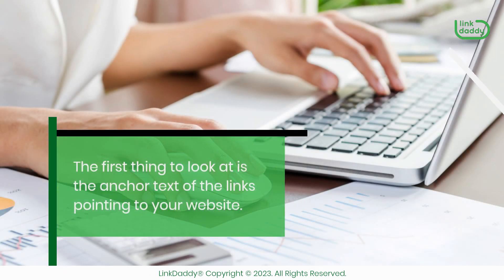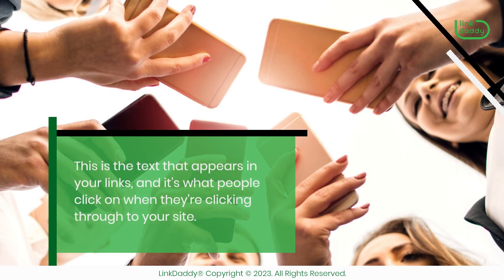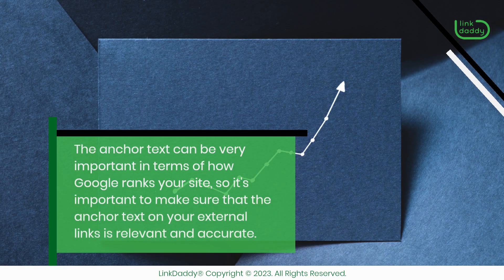The first thing to look at is the anchor text of the links pointing to your website. This is the text that appears in your links, and it's what people click on when they're clicking through to your site. The anchor text can be very important in terms of how Google ranks your site, so it's important to make sure that the anchor text on your external links is relevant and accurate.